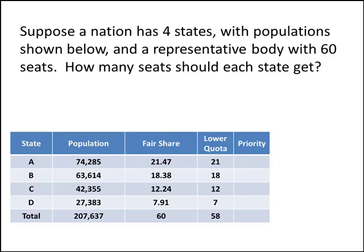That's where the priority comes in. To figure out the priority for each state, we look at the decimal part of each fair share. The largest decimal part — which in this case is for state D — gives that state first priority. The next largest is for state A at 0.47, which is second priority. Next up is state B with 0.38, that's third priority. And finally, state C is in fourth priority.